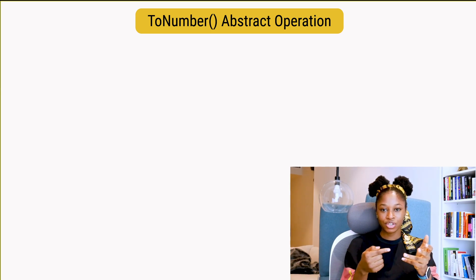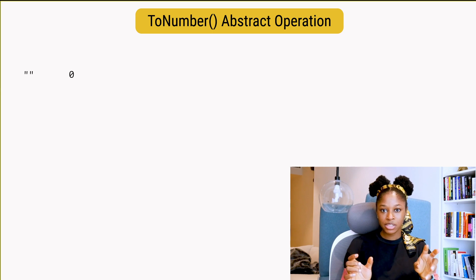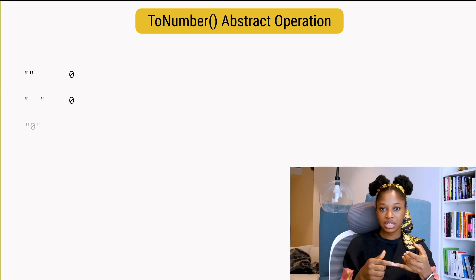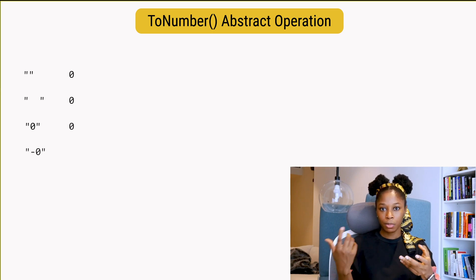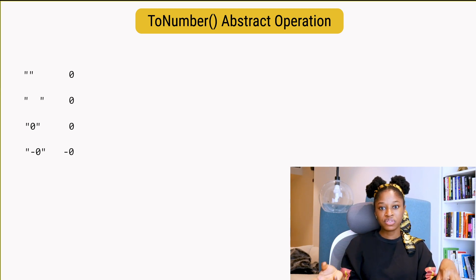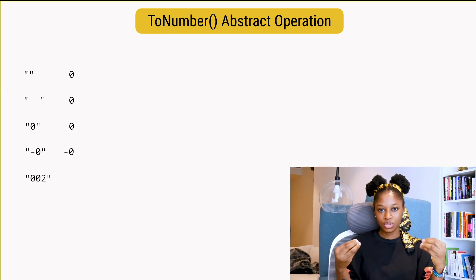The mathematical value of a string numeric literal that is empty is zero, so an empty string when coerced to a number is zero. An empty string with just whitespace will also be converted to zero. A string containing zero becomes zero, a string containing negative zero becomes negative zero. If you have a string containing whitespace, it removes the whitespace. If you have a string containing leading zeros, it strips off the leading zeros.